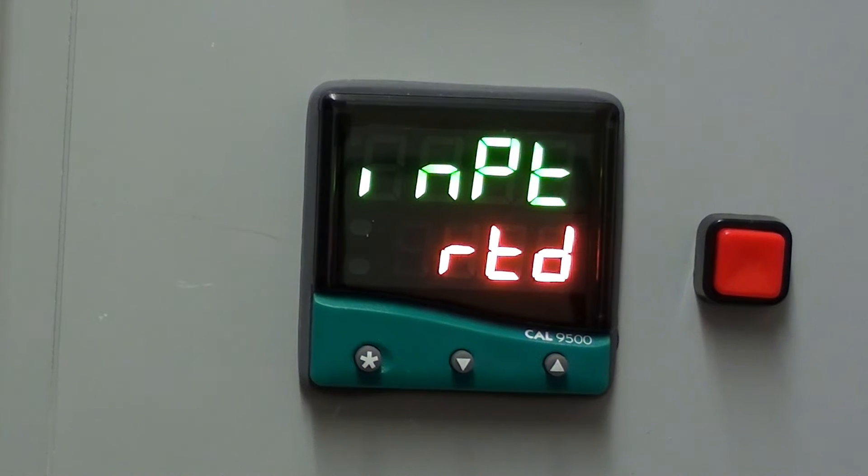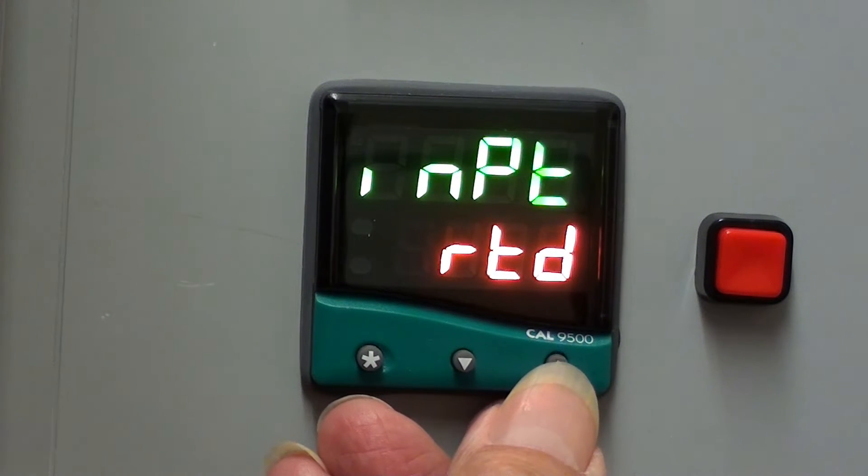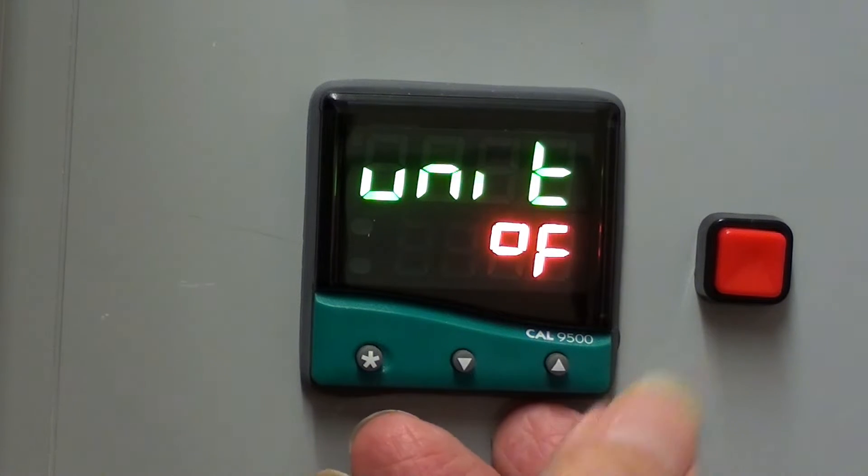To look at the other parameters at this level, press the up arrow. Here, for example, we can select units, either degrees centigrade or Fahrenheit.